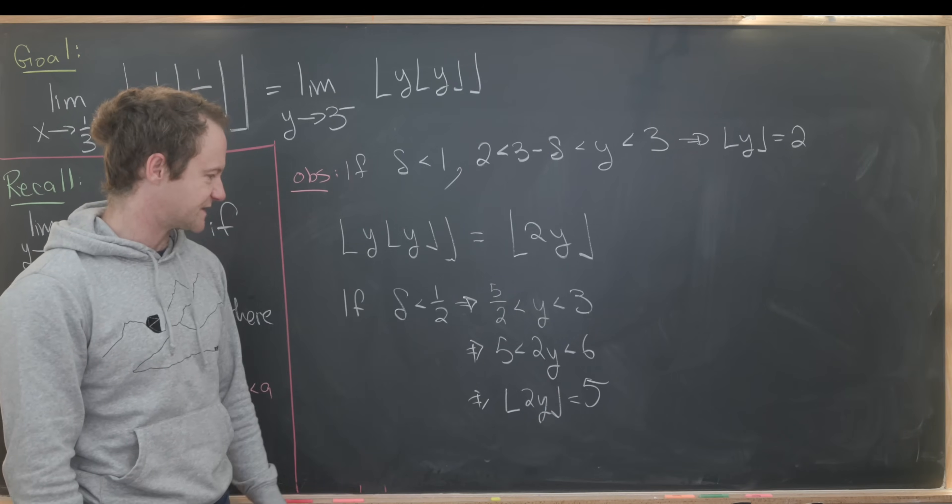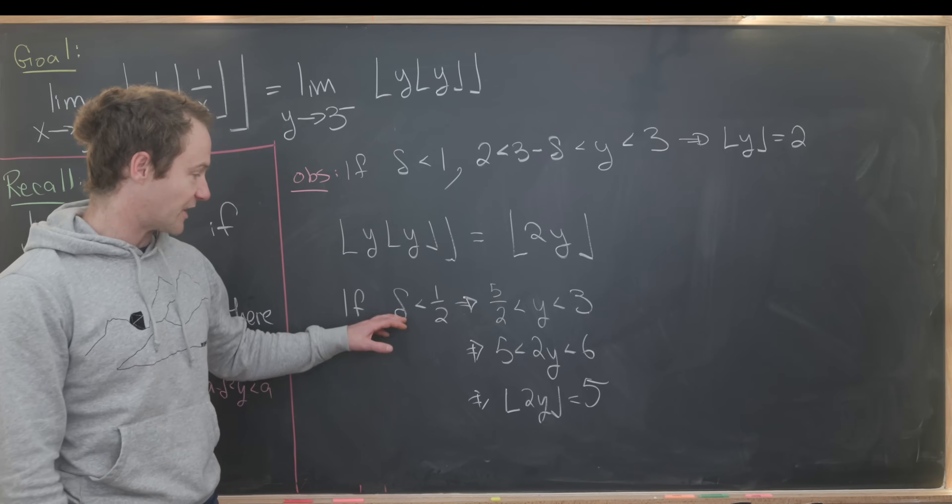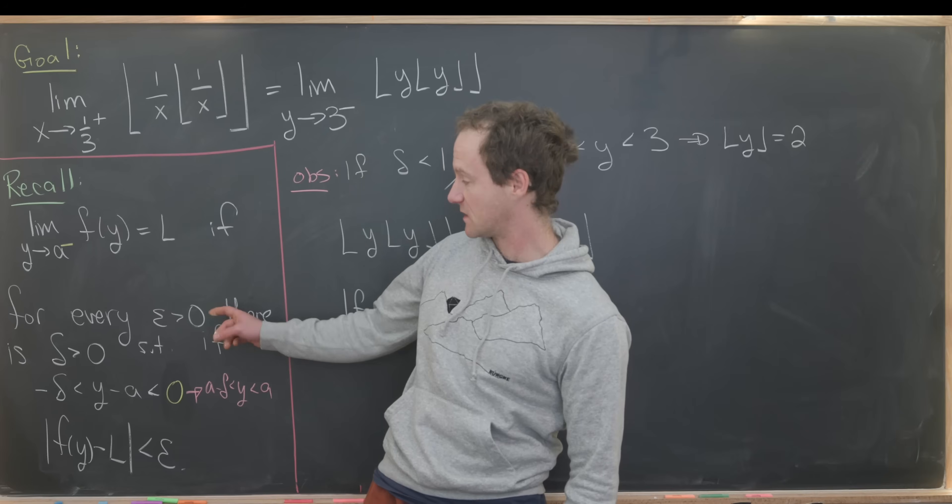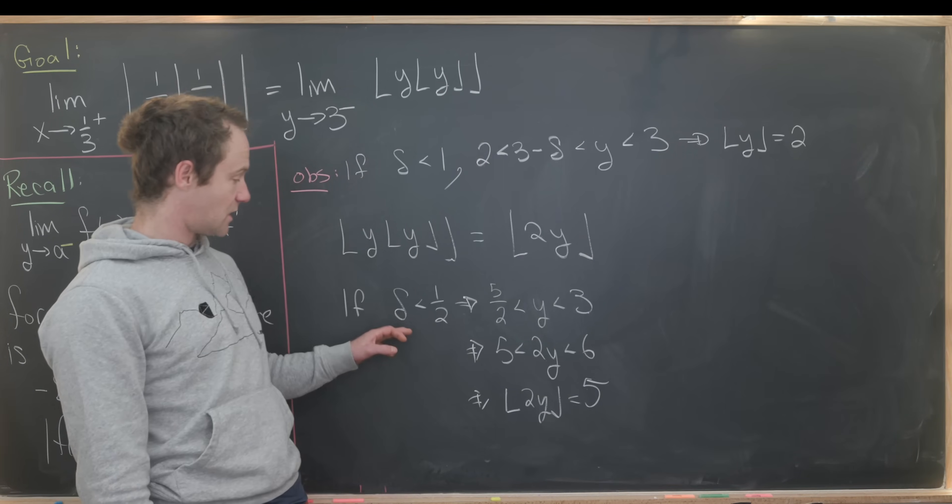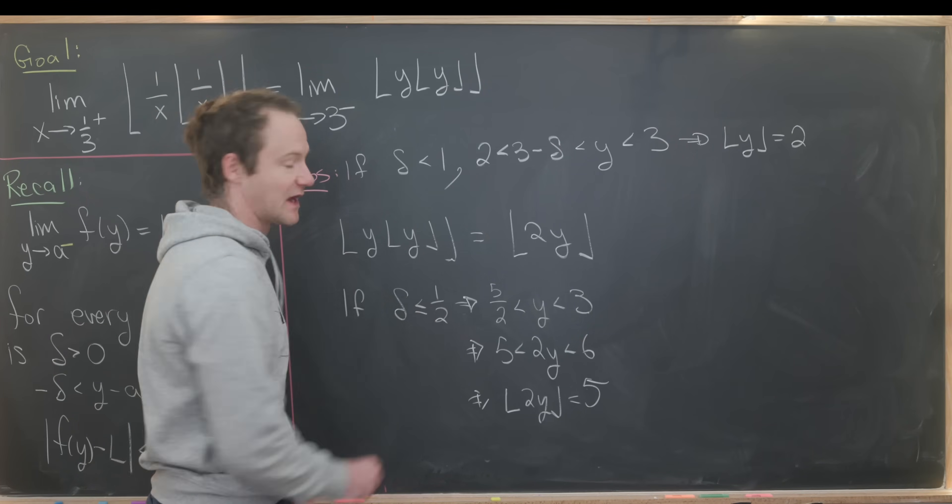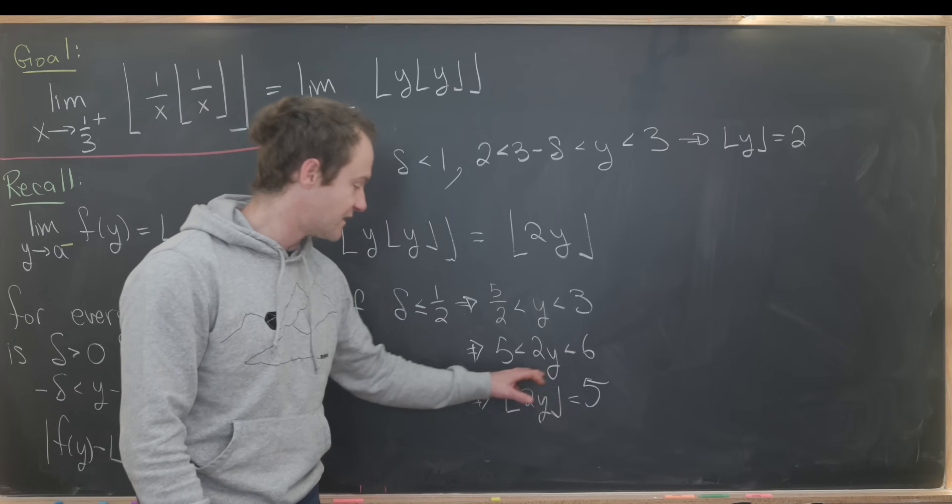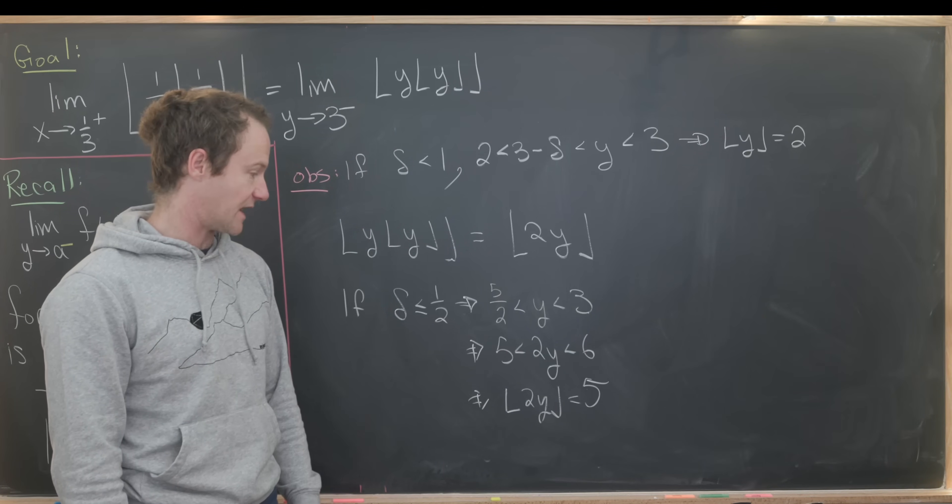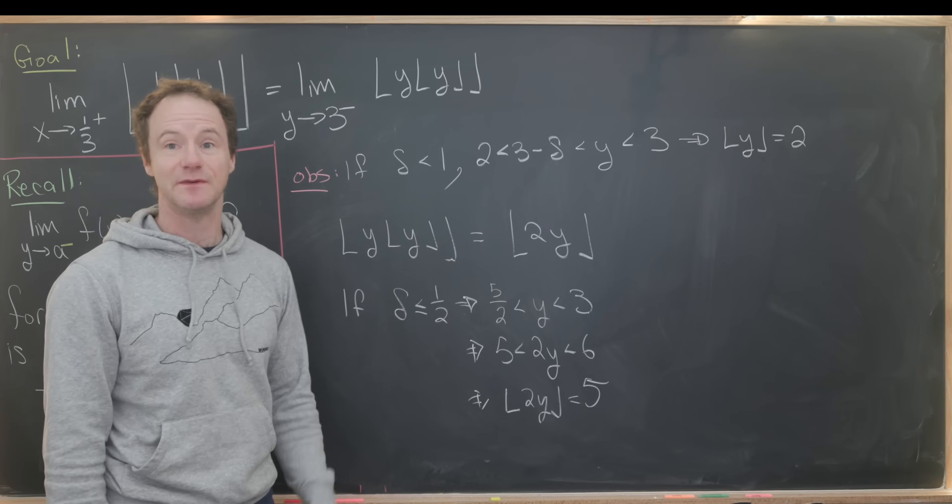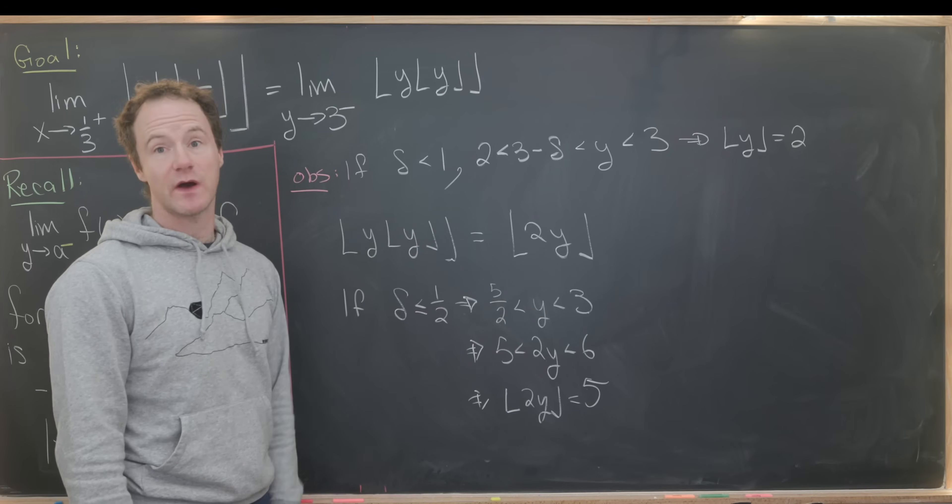So it seems like the answer here is 5. Notice we're able to get the floor of 2y equals 5 for any value of delta less than 1 half. For any value of epsilon, no matter how small it is, as long as we take delta to be less than or equal to 1 half because we have this strict inequality, we achieve the floor of 2y equal to 5. That gives us motivation that we can probably take delta to be 1 half as we write up this final solution.